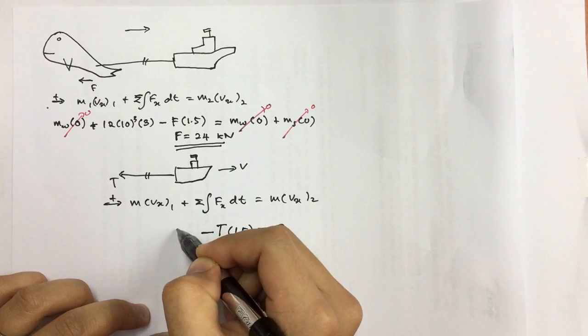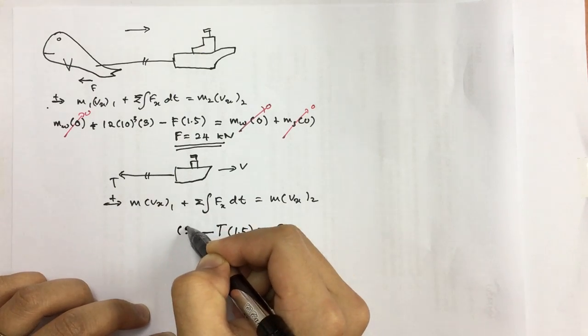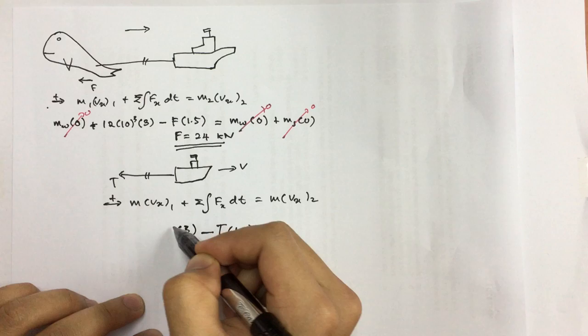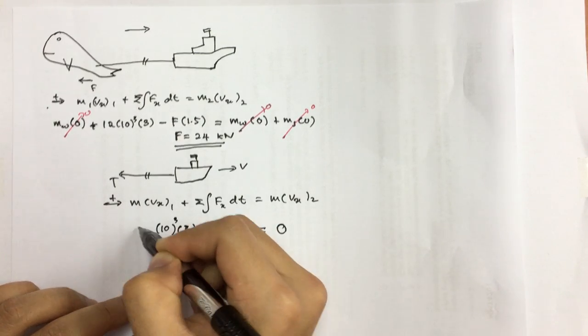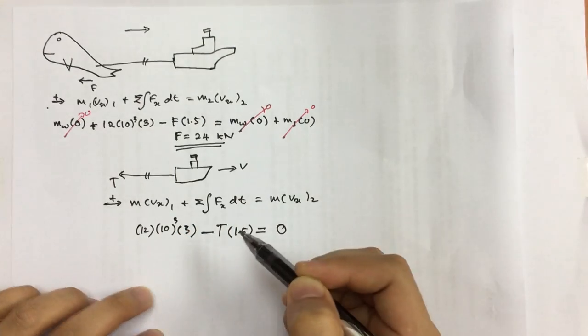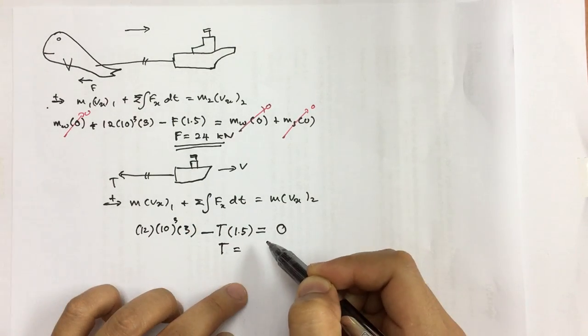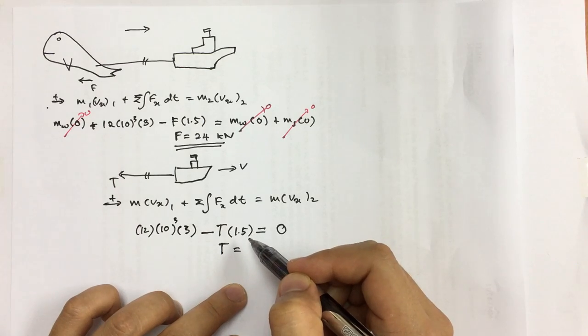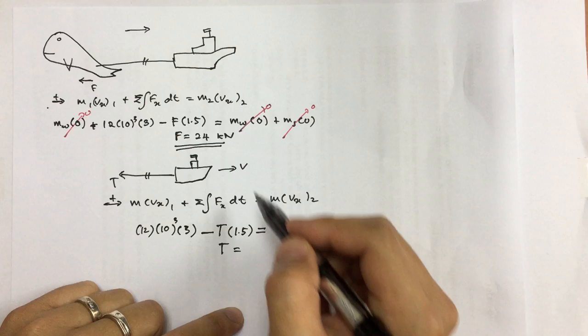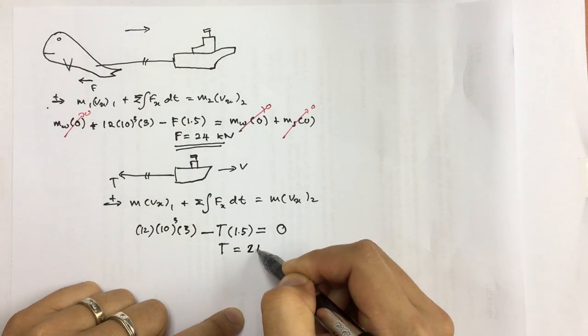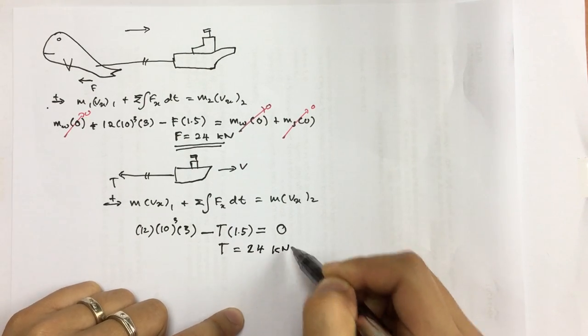The velocity is 3 meter per second, and we have 12 megagram. Once we solve for all this, we can get the tension experienced by the rope, which is 24 kilonewton as well.